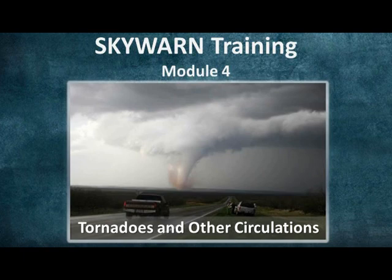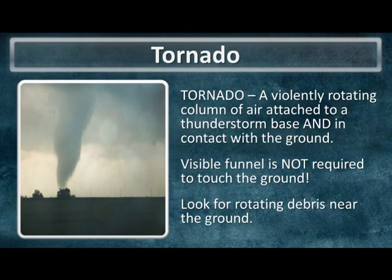Hello, I am meteorologist Charles Aldrich with the National Weather Service Forecast Office in Lubbock, Texas. We will be going over module four of the online Skywarn training session, which will be on tornadoes and other circulations. The first circulation type we're going to be talking about is the one most people associate with a severe thunderstorm when they hear circulation, and that is a tornado.